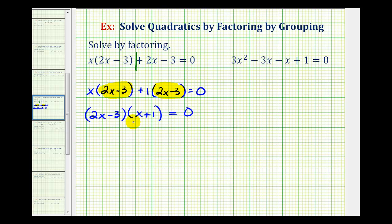Now that this is factored, since this product is equal to zero, either the first factor of 2x minus 3 must equal zero or the second factor of x plus 1 must equal zero if this product is equal to zero. And now to find our solutions, we'll solve these two equations for x.